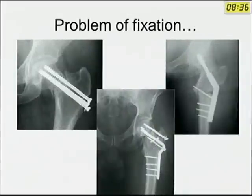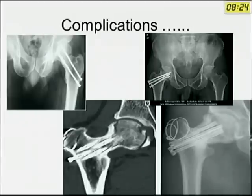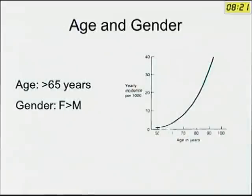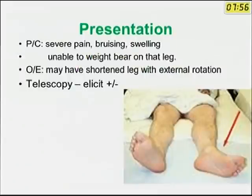The problem of solving this fracture is difficult because of the problems of fixation, the choice of implant difficulties, and the intrinsic complications associated with these fractures. Regarding age and gender, the age is usually above 65 years and females outscore males. Factors affecting outcome include osteoporosis, endocrine disorders, gait disorders, neurological disorders, frequent history of falls, and patients not in a good pre-ambulatory status before the fall.